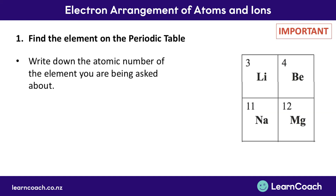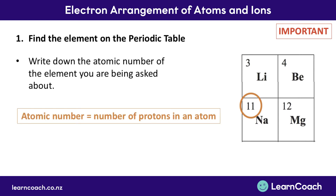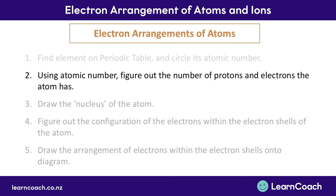Once you've found the element on the periodic table, you then need to write down the atomic number. When we look at the periodic table here, we can see that sodium has an atomic number of 11. We know that this is the atomic number because it's located in the top left-hand corner above the symbol of the element. This is a really important step, because the atomic number is equal to the number of protons in an atom. So once you've successfully done step one, you can move on to step two, which involves using the atomic number to figure out the number of protons and electrons that the atom has.